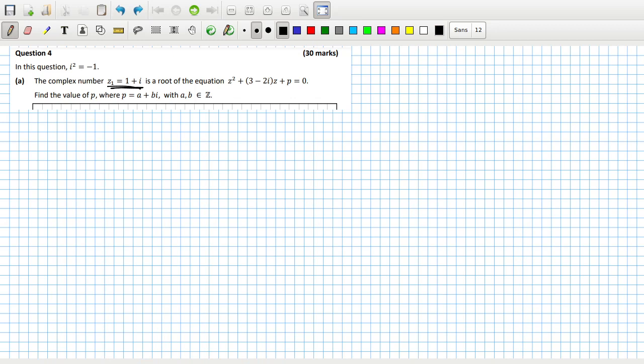So we know that this is a root. So when we sub it in, we're supposed to get zero. So 1 plus i squared plus 3 minus 2i times 1 plus i plus p, that should equal zero.